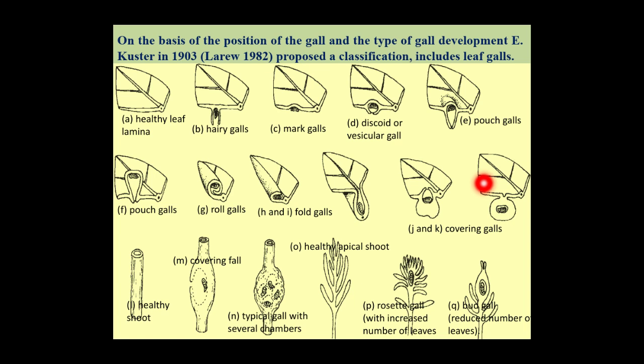Another type of gall is the rosette and bud gall. This is the healthy apical shoot. In this rosette and bud gall, there is a proliferation and miniaturization of new leaves, and there is also a shortening of internodes. As a result, a pine cone-like gall is formed.